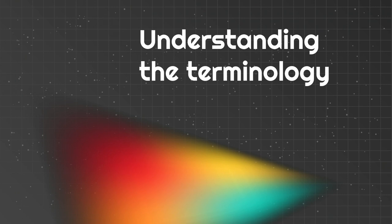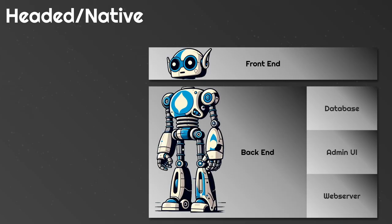So now we have a base analogy. The headed or native or out-of-the-box approach means the CMS provides both your front end and your back end — also called a traditional CMS because everything's baked in. Drupal traditionally is a traditional CMS: it has a front end, a back end, manages your database, your admin UI. It's batteries included, and you don't need to bring other technologies to fully achieve a working site.